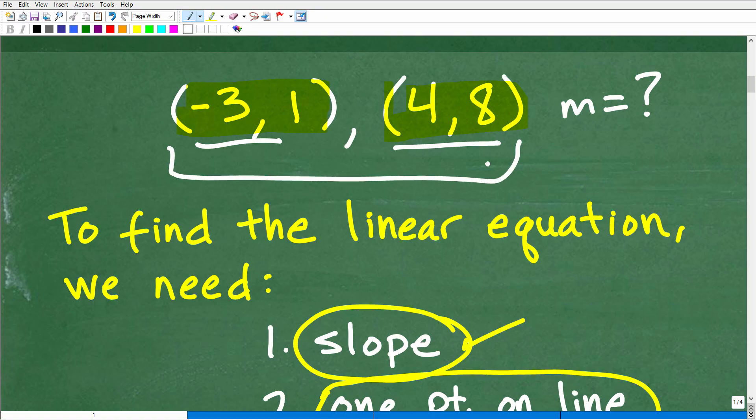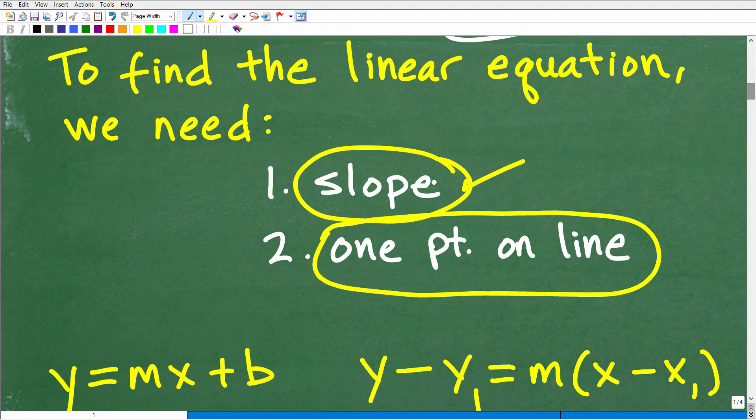And then once we have the slope, we can either use this point or this point to answer the question. But this is the basic information that we need. We need the slope of a line, and at least one point is on the line. Now, once we have that information, we can use one of two formulas.